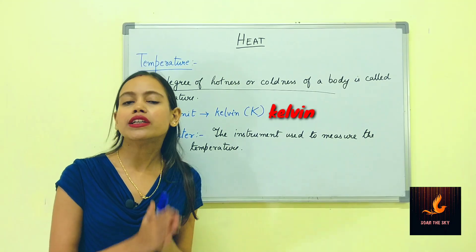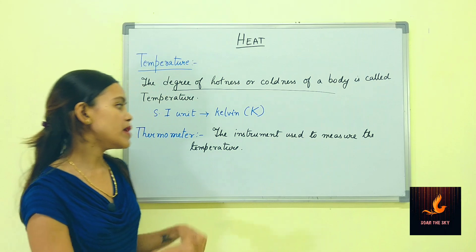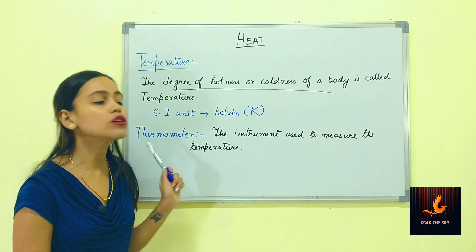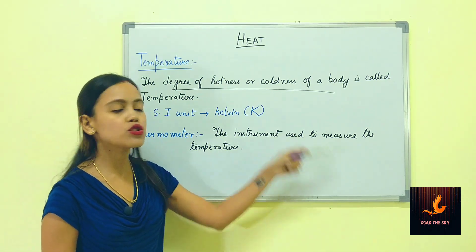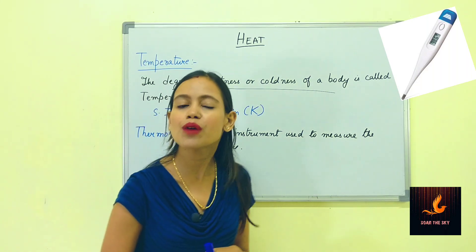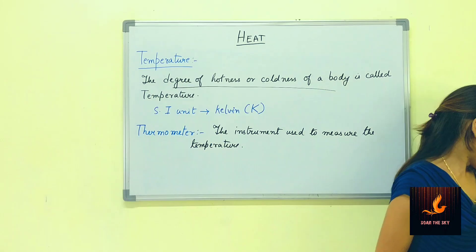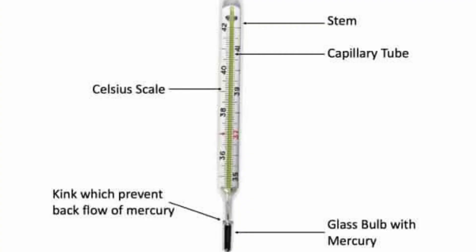Temperature is the degree of hotness or coldness of a body, and its SI unit is Kelvin. The temperature of a body is measured using an instrument called a thermometer. A basic thermometer has three parts. The first part is the bulb, at one end of the tube — this is the part that actually touches the object, and it contains either mercury or alcohol depending on the type of thermometer.